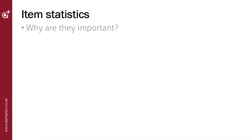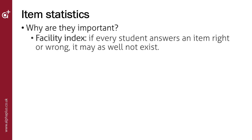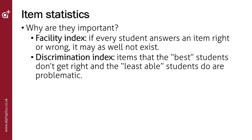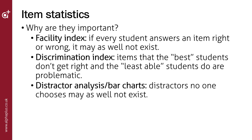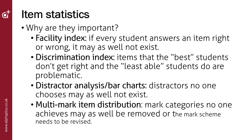So why are item statistics important? They tell you that there is likely to be a problem with an item that will need investigating. The facility index highlights items where every student answers right or wrong — these may as well not exist as they don't discriminate between students of different abilities. The discrimination index flags items where the most able students don't get the right answer and the least able do. Distractor analysis bar charts identify distractors no one chooses, which are not helping discriminate. Multi-mark item distribution identifies mark categories no one achieves, indicating the mark scheme needs revision.